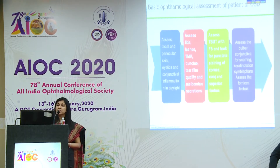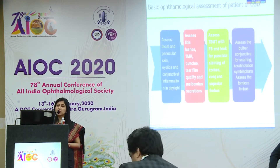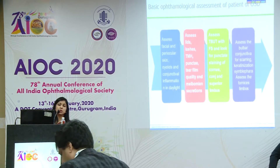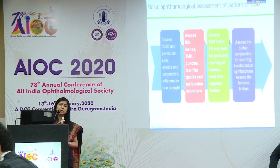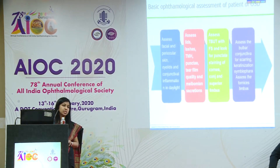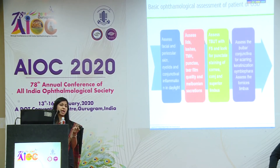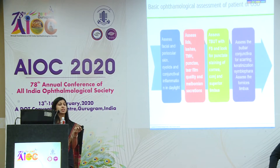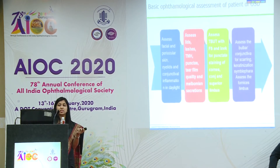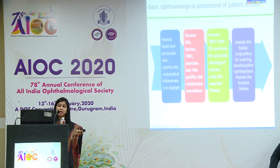We have to understand what the basic ophthalmological assessment includes: a proper assessment of the facial skin and the periocular skin. Start with a broad daylight exam before the slit lamp, then go on to the slit lamp examination, looking at every part — the lids, the lashes, the puncta, the meibomian secretions, the tear film quality, and the tear film breakup time.